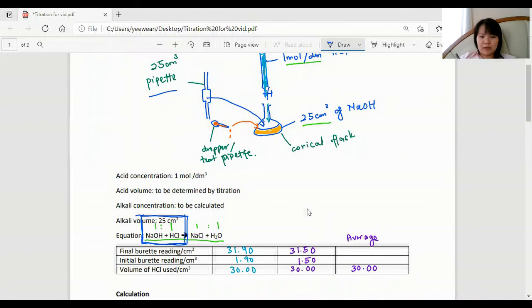The reason we repeat this experiment and get the average is so that we can eliminate random errors here. So this is the reason for repeating the experiment to get a more reliable result.